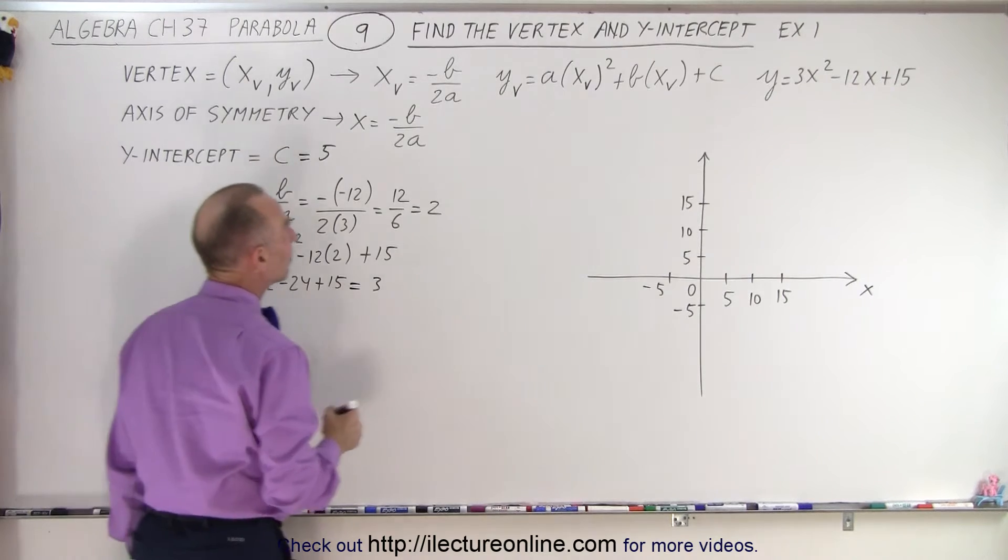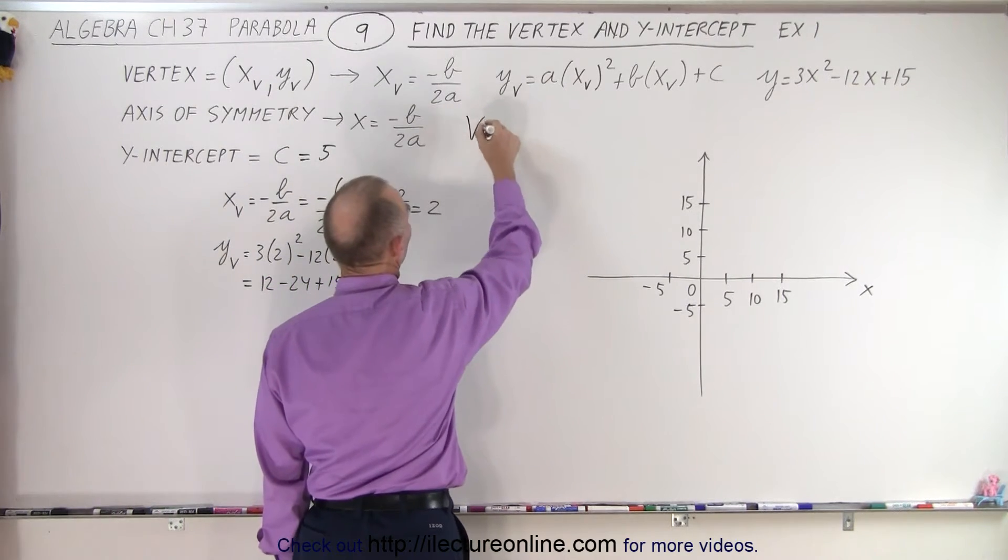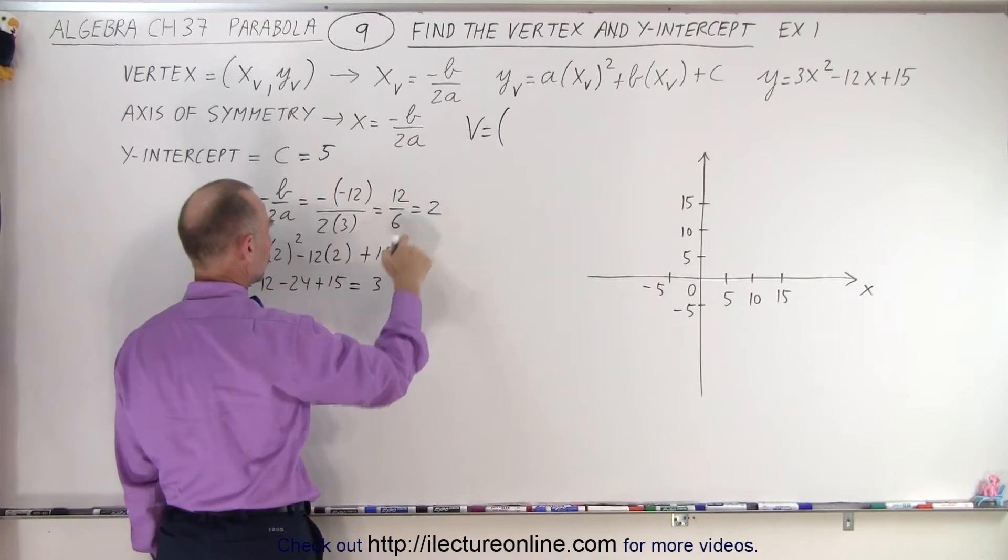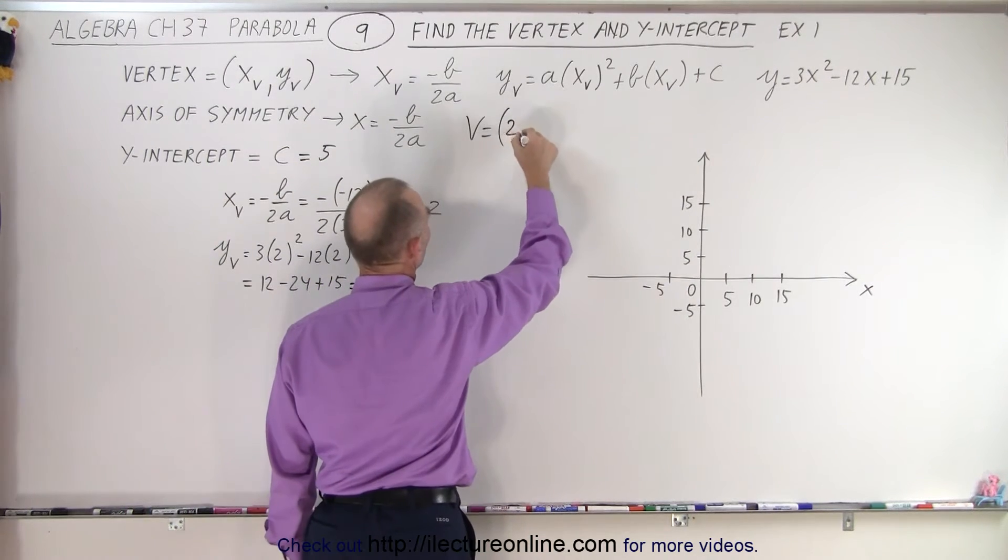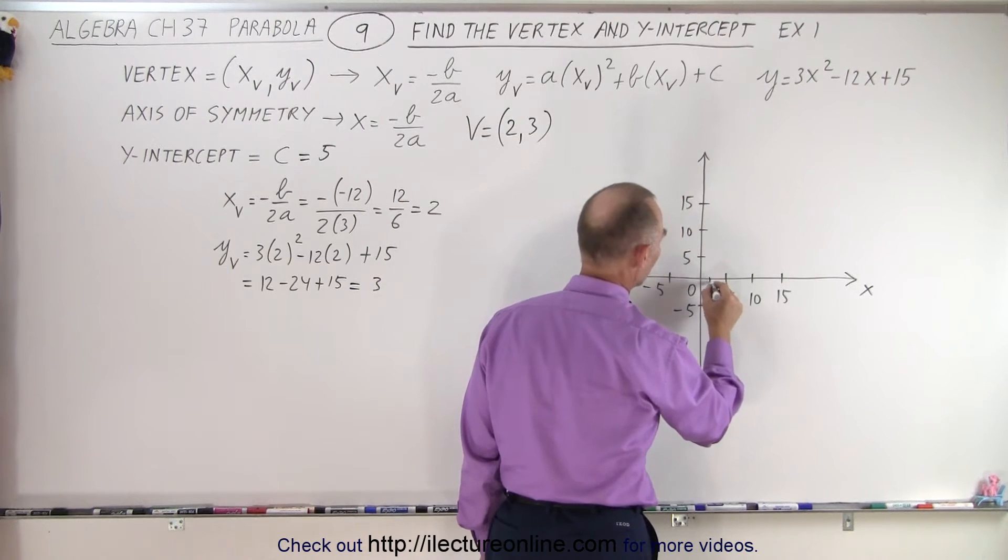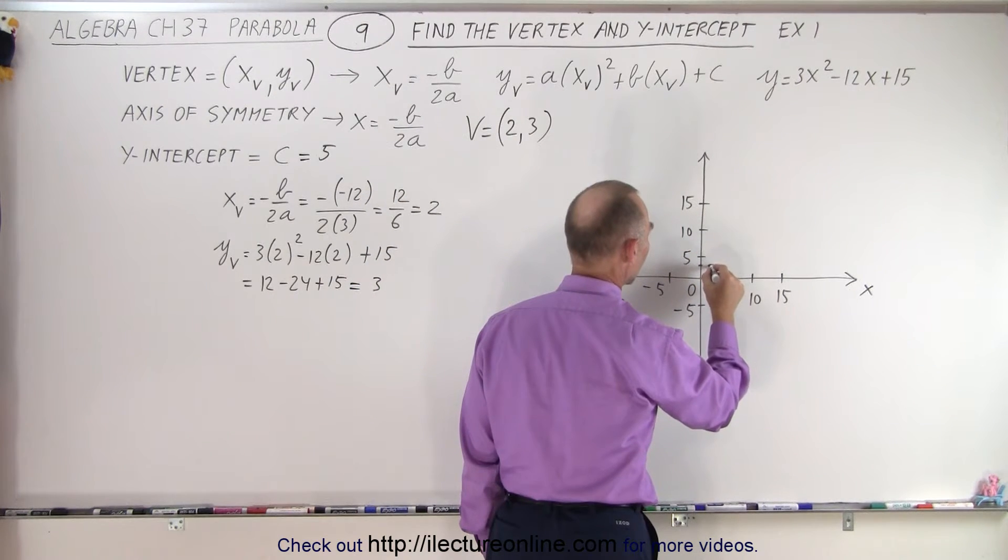which means the vertex is at the point where x-coordinate is 2 and y-coordinate is 3, so (2,3). Let's find that point: x = 2, y = 3, which is right about there.